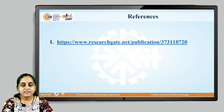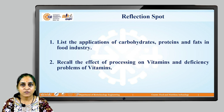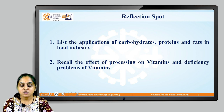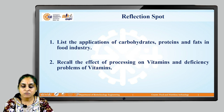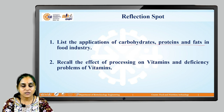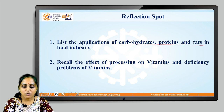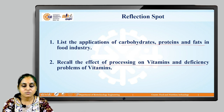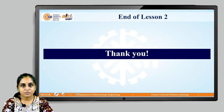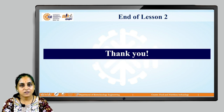These are the references for the content being taught — you can go through them. For the reflection spot homework: list the applications of all macronutrients — carbohydrates, proteins, and fats — in the food processing industry, and recall the effect of processing on vitamins and deficiency problems of vitamins. With this, we will end today's session. Thank you so much.